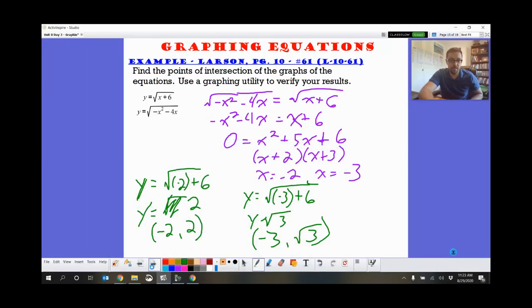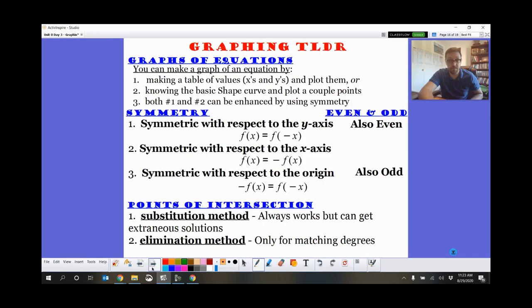Thanks, everybody. It's not it for today. Anything else is going to be online. But here's our TLDR again. Please remember these symmetry things. If you replace x with negative x and you get the same thing, it is an even function reflecting over the y-axis. If you can slap a negative and nothing changes, it's reflective over the x-axis. If you can do both at the same time, you don't have to turn back an f of x. It becomes an odd function. Substitution always works, but gets extraneous. Elimination, you need to have matching degrees. So that's it. Thanks. Bye-bye.